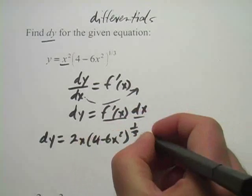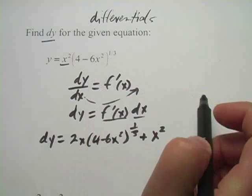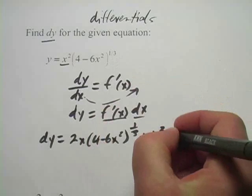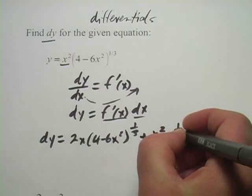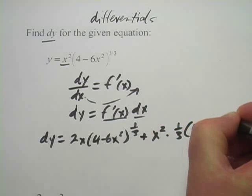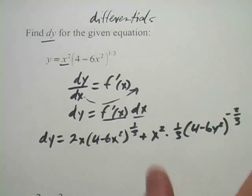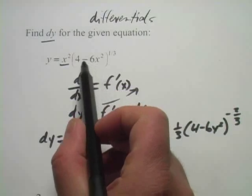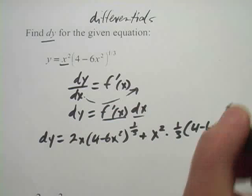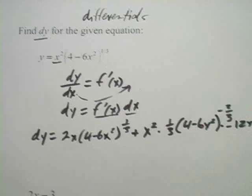plus the first thing times the derivative of the second thing. Using the power rule, we've got 1/3 times (4-6x²)^(-2/3), and that's multiplied by the derivative of the inside piece, which is -12x.